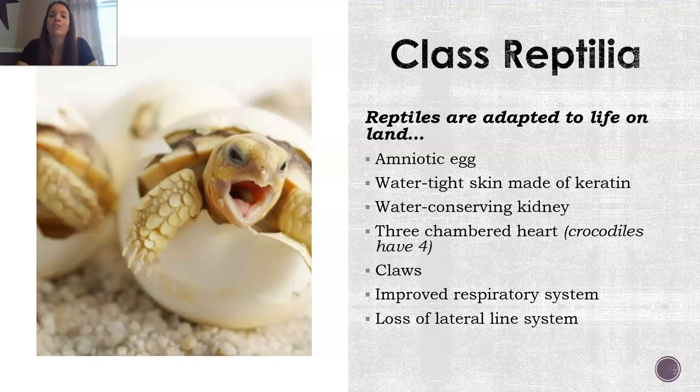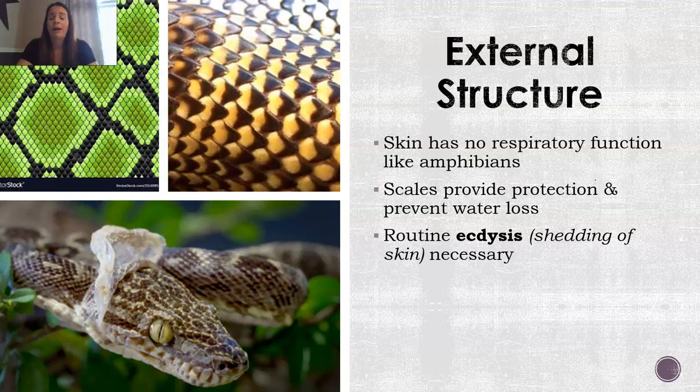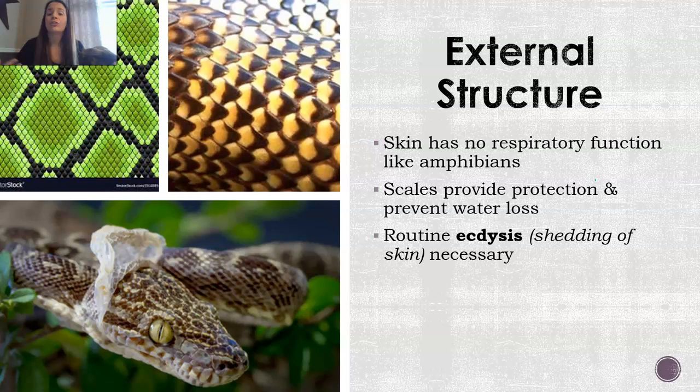Looking at external structure: the skin doesn't have a respiratory function — they cannot breathe through their skin like an amphibian can. But their scales do provide protection and also prevent water loss. And just like some other animals, they do have to shed their skin, and this is called ecdysis.